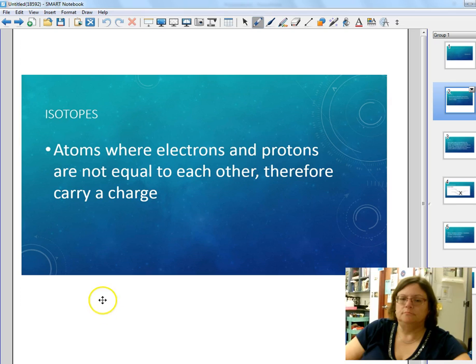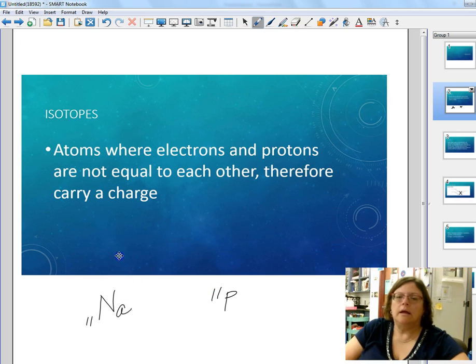For example, sodium has 11 protons and when it's an ion it will have a plus one charge. So that means that the protons and electrons are not equal to each other. If we subtract electrons and we have to, it has to add up to plus one, how many electrons must we have? Ten.